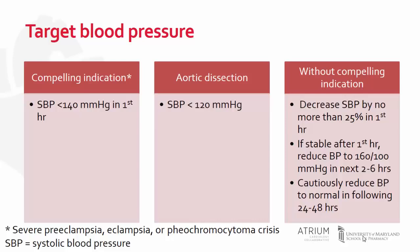Then, if stable after the first hour, we want to reduce the blood pressure to 160 over 100 millimeters of mercury in the next two to six hours. Following that reduction to 160/100 millimeters of mercury, we then want to cautiously reduce the blood pressure to normal in the following 24 to 48 hours.